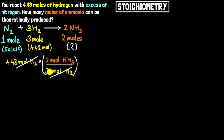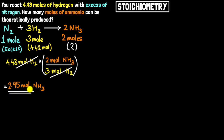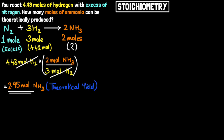Once we have the correct conversion factor, we plug the numbers in: 4.43 times 2 divided by 3, giving us 2.95 moles of NH₃. This result is called the theoretical yield, because it's the number we get on paper — in theory. The actual amount of ammonia you might get in the lab could be quite different.